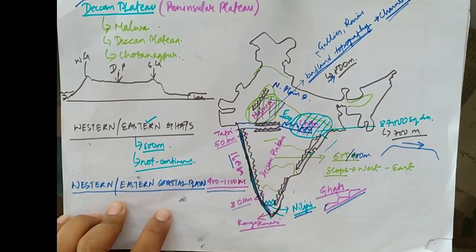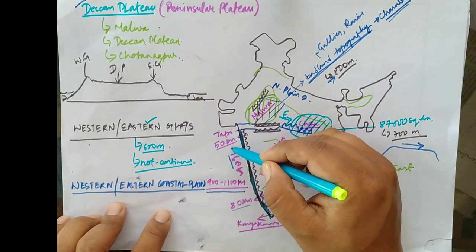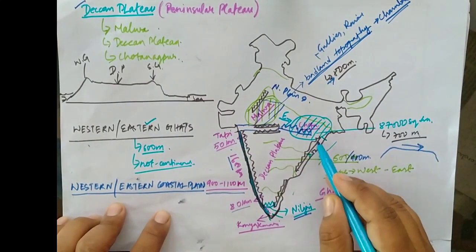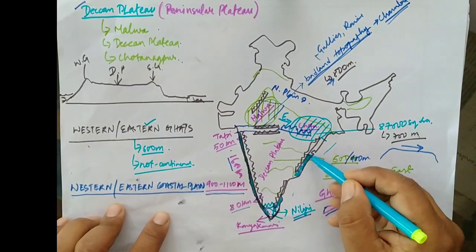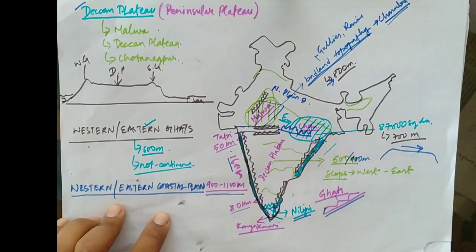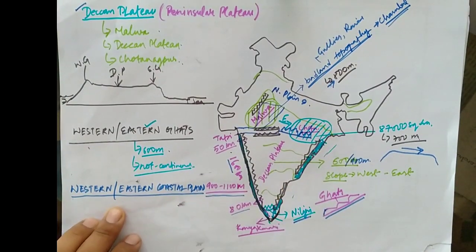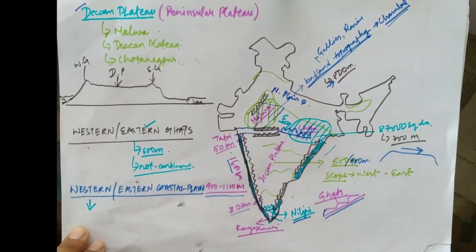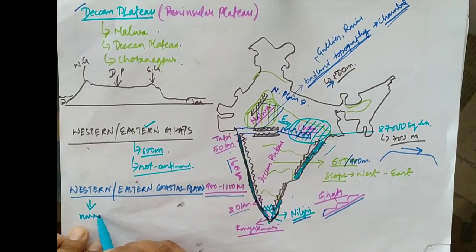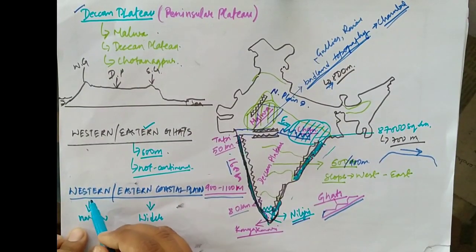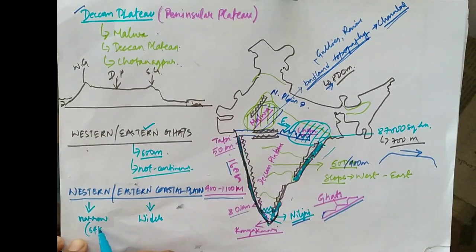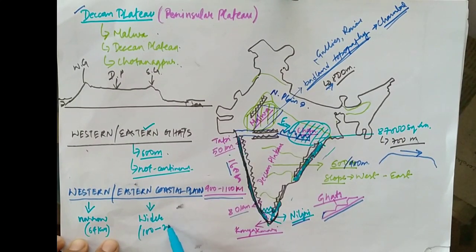The Western Coastal Plain lies between the Arabian Sea and the Western Ghats, whereas the Eastern Coastal Plain lies between the Eastern Ghats and the Bay of Bengal. The main difference between the two is their width. The Western Coastal Plain is very narrow — in some parts it is even absent. The Eastern Coastal Plain is broader, with an average width of 64 kilometers for the western and 100 to 200 kilometers for the eastern.